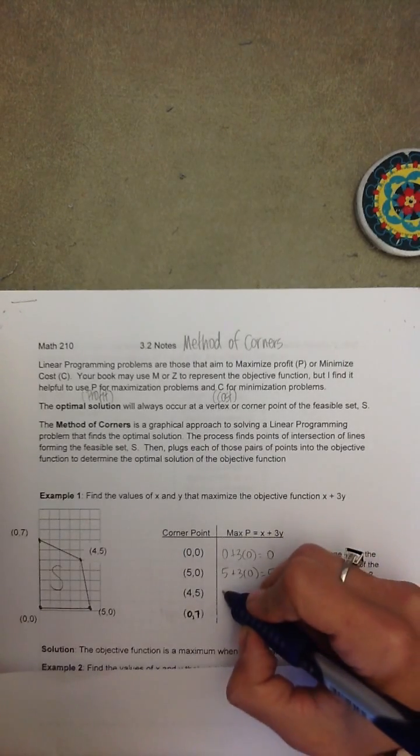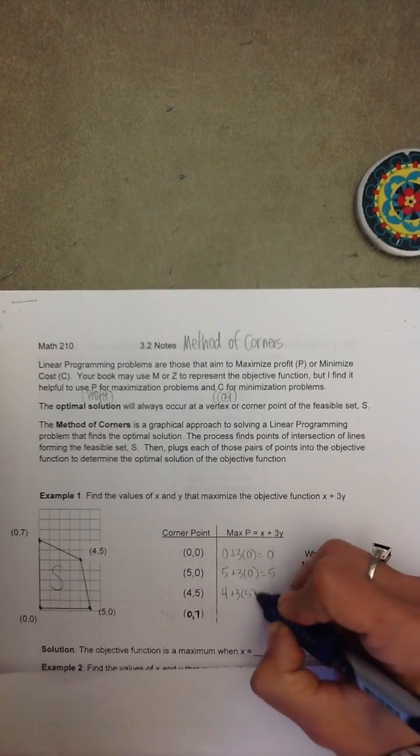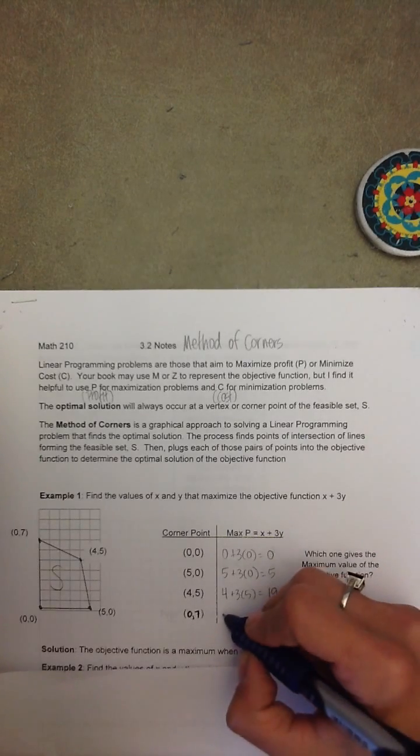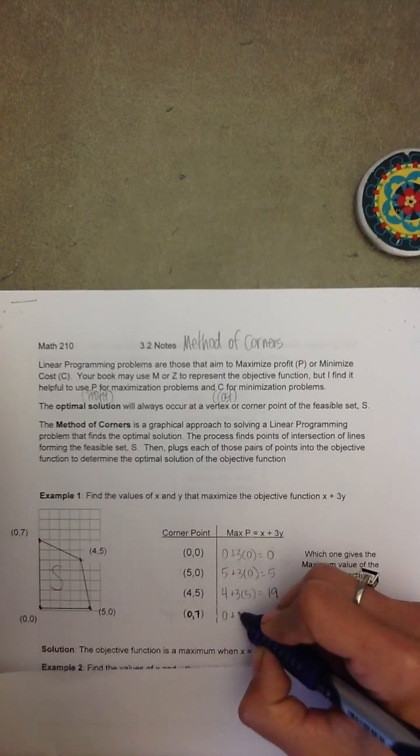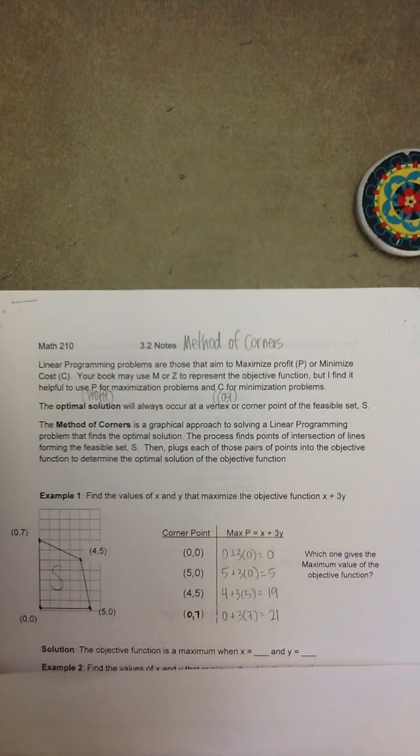For the next corner point, we replace X with 4 and Y with 5, and we get 19. And then finally, for (0,7), we replace X with 0 and Y with 7, and we get 21.